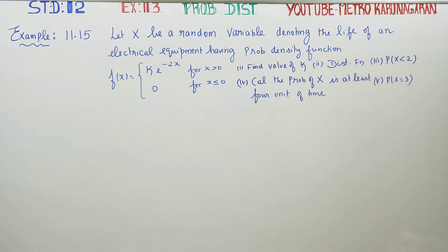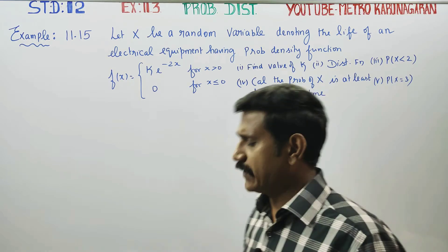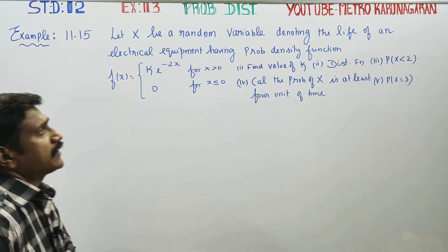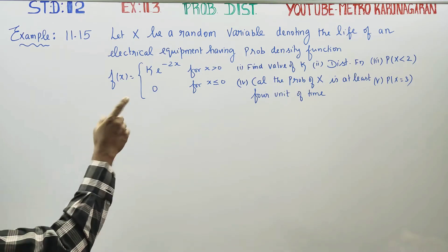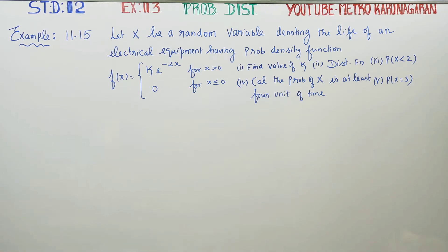Dear 12th standard students, in probability distribution, example 11.15 from section 11.3. Let X be a random variable denoting the life of an electrical equipment, having the probability density function. Find the value of K.